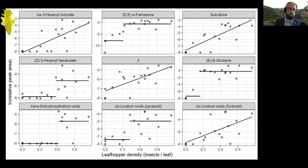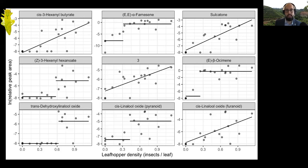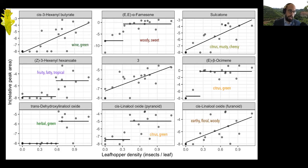For the top nine compounds, some have a threshold effect while others have a linear response. Interestingly, many metabolites with a threshold response have that threshold around 0.5 leafhoppers per leaf — the same threshold we saw for the relationship between density and damage. Overlaying the aroma percepts of these chemicals, most of them have a pleasant-sounding aroma. So we're probably getting increases in quality as leafhopper density increases, with a potential threshold at that 0.5 insects per leaf.